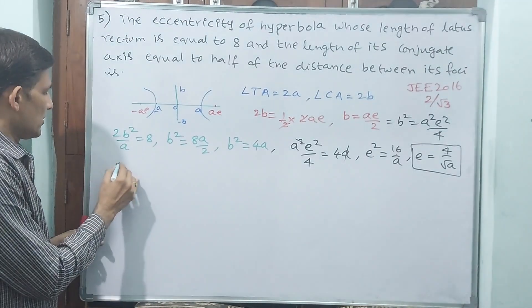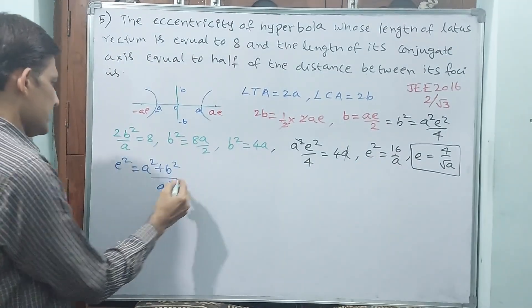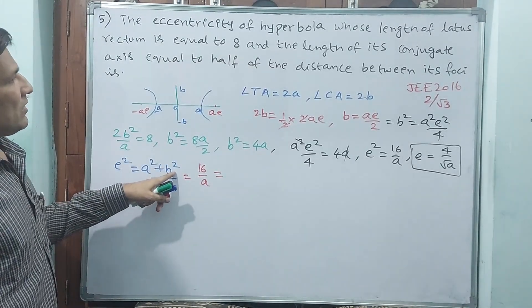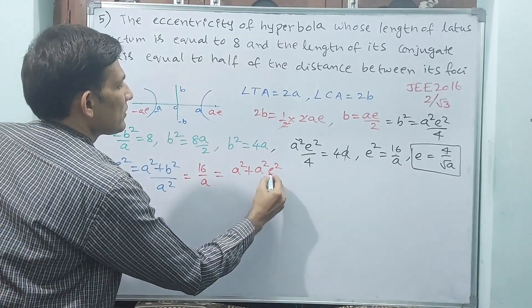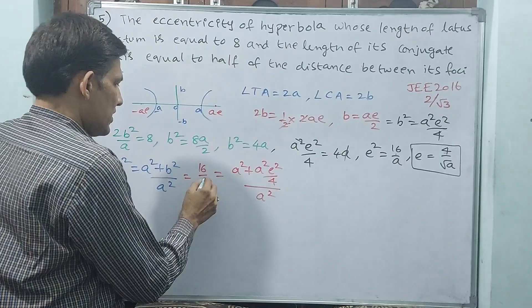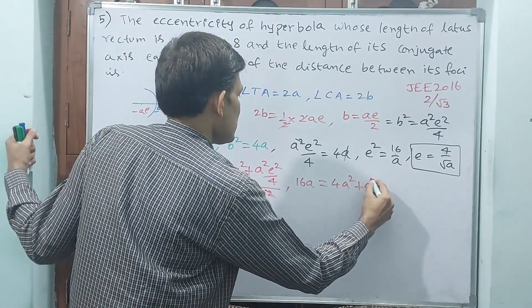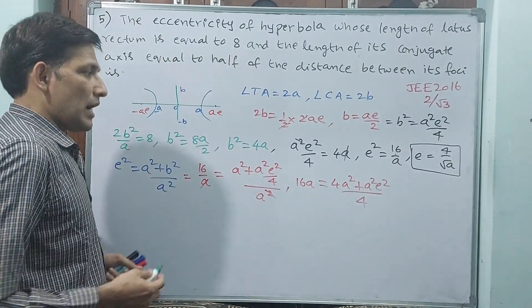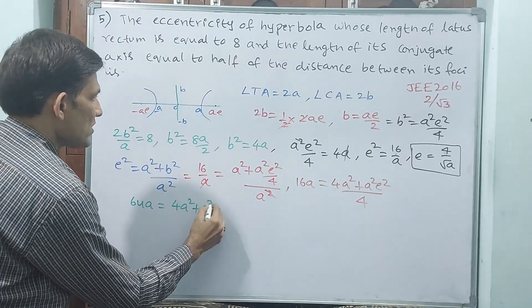We also know one formula: E square is equal to A square plus B square by A square. E square is 16 by A. Then you equate it here. 16 by A is equal to, but B square value we have as A square E square by 4, right? So A square plus A square E square by 4 by A square. In form of A we are bringing.